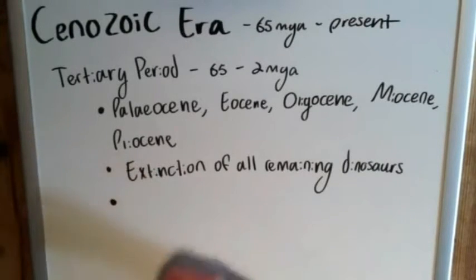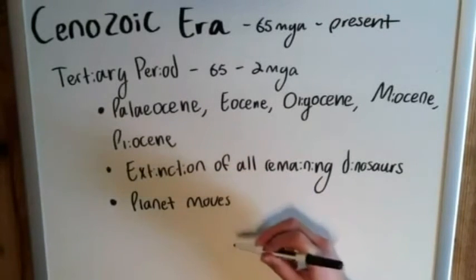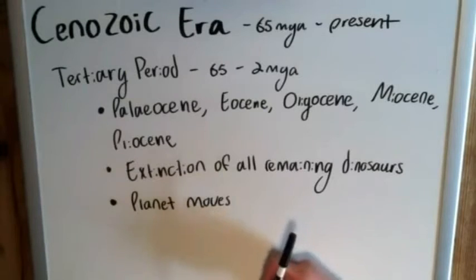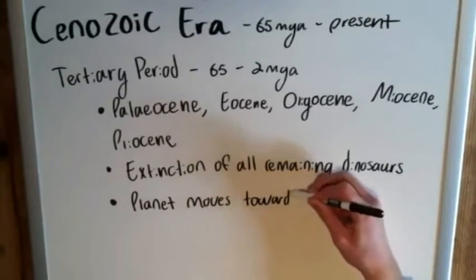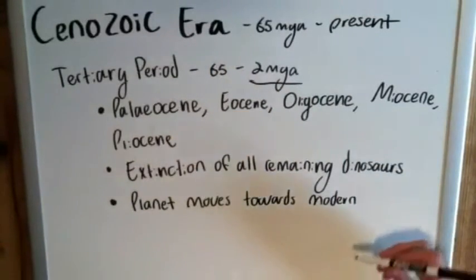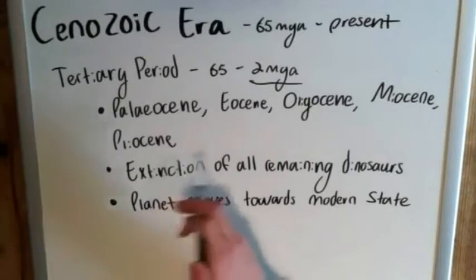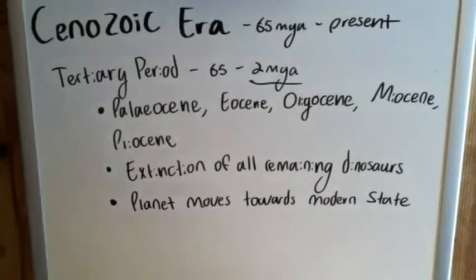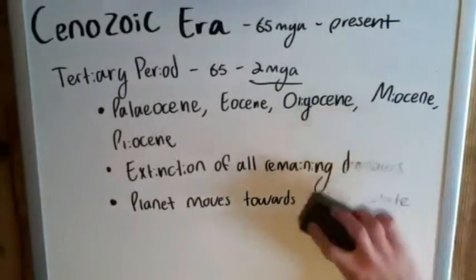The second big thing is that by the end of the Tertiary Period, the planet has basically moved into its modern-day state. This is where we see the continents finally come into place and the climate stabilize into what it is today. And that makes sense given that we're only two million years away from present day. Those are the big things that fit under the Tertiary Period — maybe in a future video I'll break down each of the smaller epochs, but for now we'll just talk about the bigger picture.